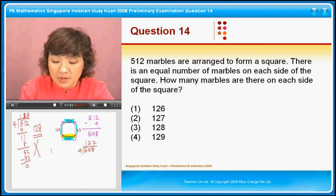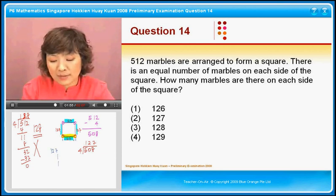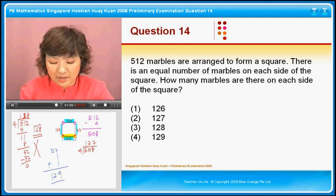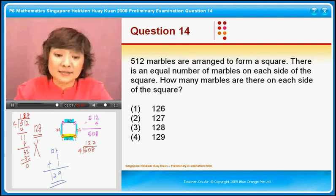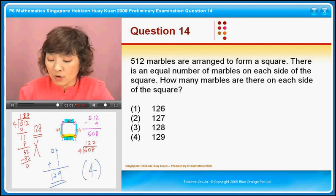So you add them all up. You have 127 plus 1 plus 1. You have 129 as your answer. So you choose option 4 as the answer.